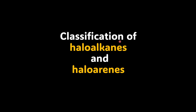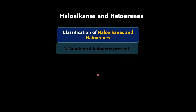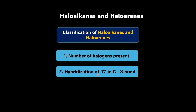Hi there. In this video we will learn about the classification of haloalkanes and haloarenes. When it comes to classification, we can classify haloalkanes and haloarenes on the basis of the number of halogens present, and on the basis of hybridization of carbon in the carbon-halogen bond.